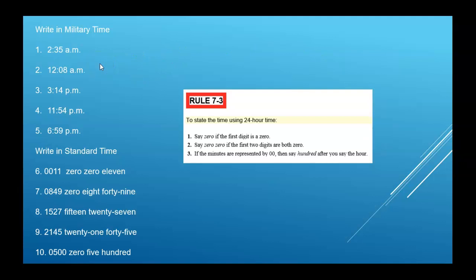All right, and here are some practice. So military time, this would be 0235. 1208 a.m., remember, is the beginning of the day. So this 12 is actually 00, so it'd be 0008. 314 p.m., 3 o'clock, you add 12, that's 1514. 1154 p.m., you'd add 12, 2354. 659 p.m., you add 12, that's 1859.